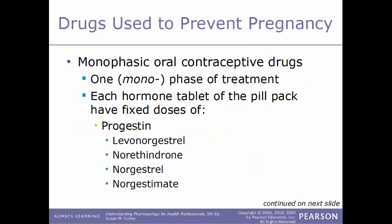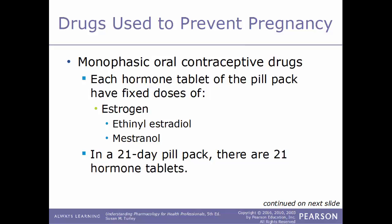The first category is monophasic oral contraceptive drugs. The prefix mono means one, so this is one phase of treatment — each hormone tablet in the pill pack will have a fixed dose of progestin and estrogen. Examples of drugs in the progestin category include levonorgestrel, norethindrone, norgestrel, and norgestimate. Examples of drugs in the estrogen category include ethinyl estradiol and mestranol.